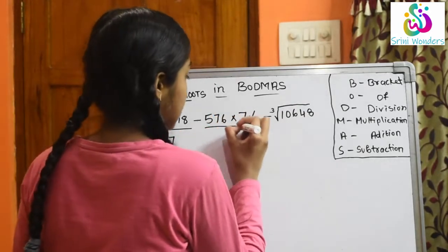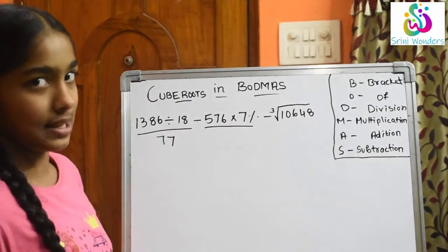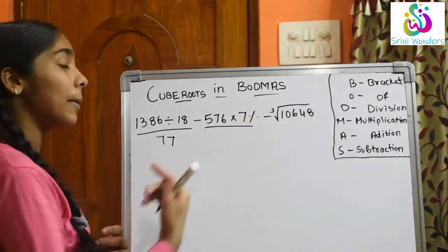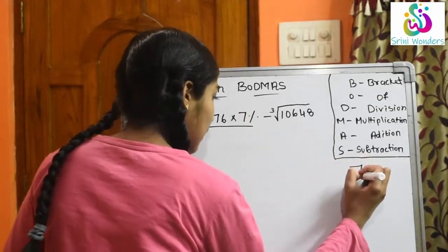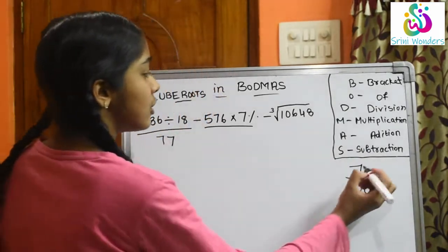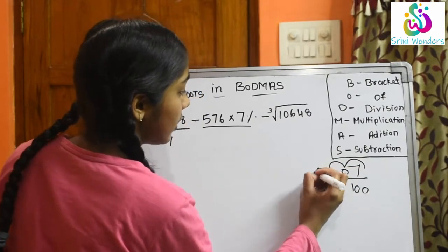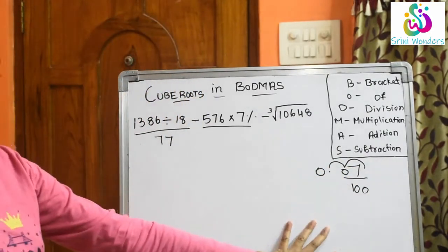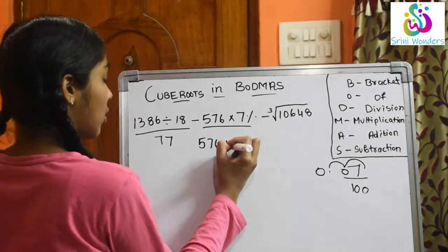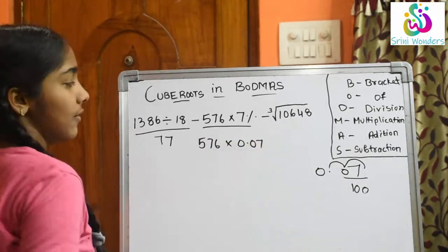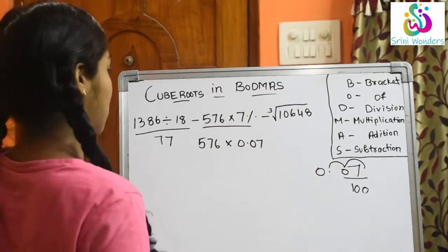Next we will solve 576 into 7 percent. The 7 percent we should convert into decimal. To convert into decimal we divide by 100. So here we move two decimal places and we get 0.07. So 576 into 0.07 we will do. I am telling this in Abacus way — it is very easy to do.